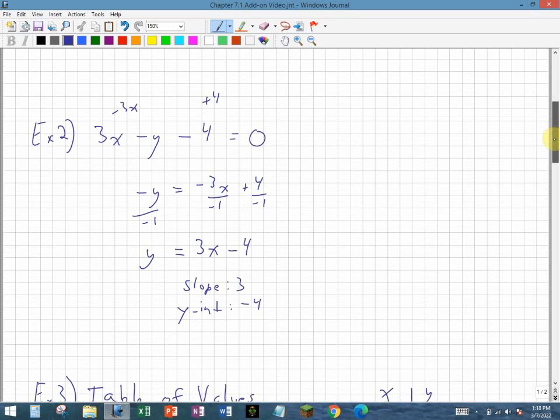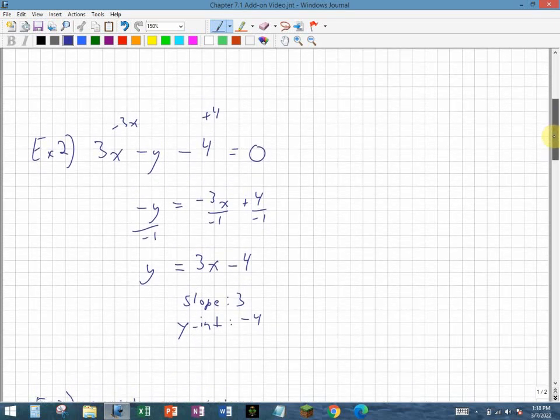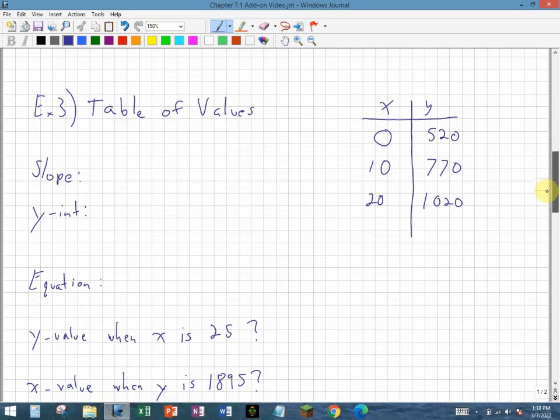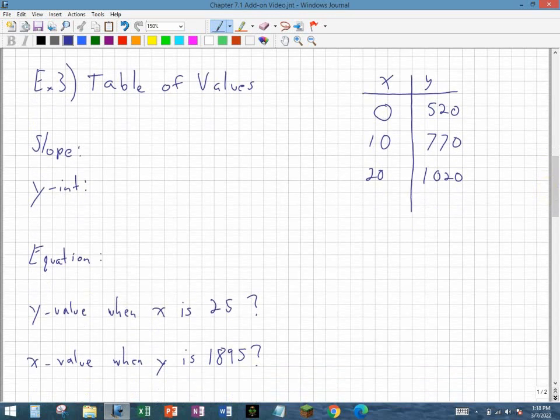This means that my slope in this case is 3, not negative 3 like we had up here. 3 because, remember, we had to divide by the negative 1. And my y-intercept is, of course, negative 4. So those are two types of examples where they would be equal to 0, the equation, and you just have to move the value over.